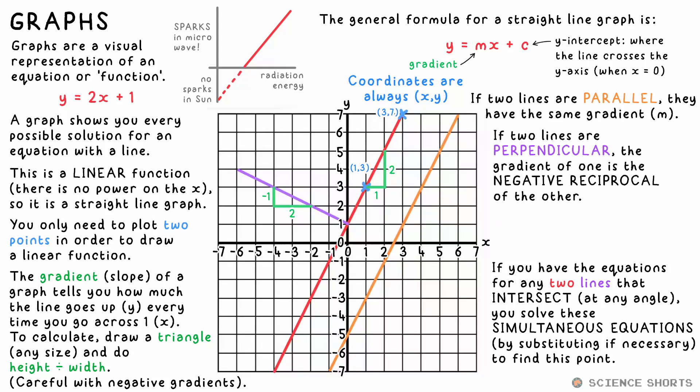If the two lines are perpendicular, you also know that the gradient is the negative reciprocal of the other. That's because the triangle we would draw for the other one has been rotated 90 degrees, so the height and width have been swapped. It's not two over one, but now one over two.